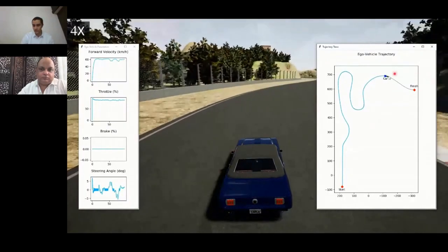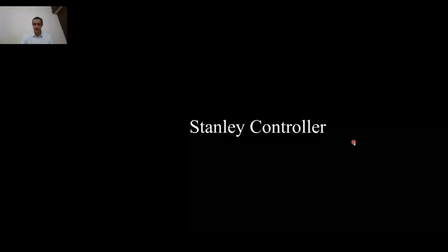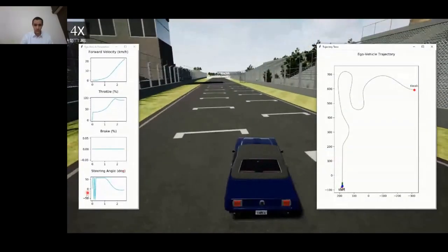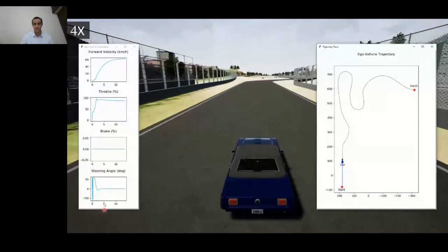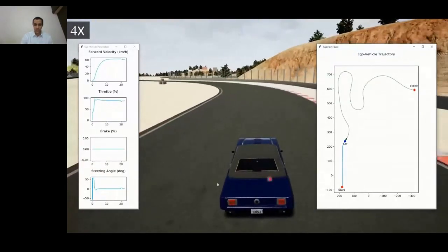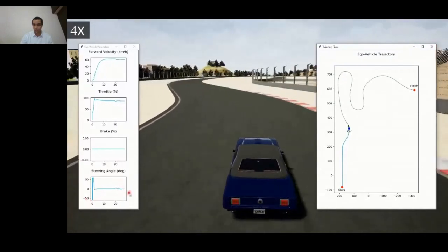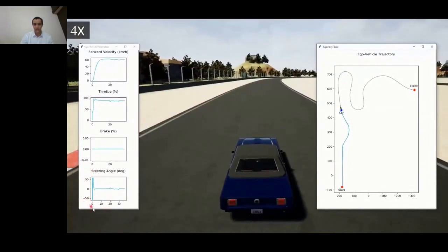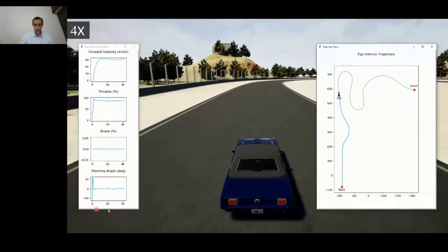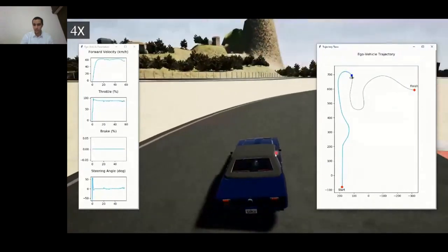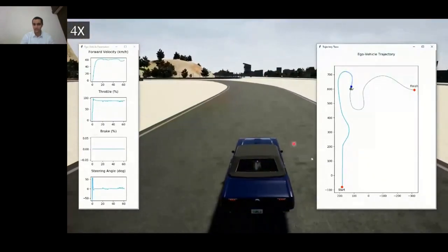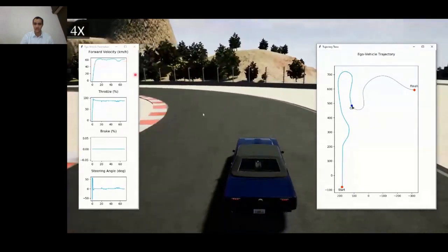Now, if you look at the Stanley control law, the initial part of the simulation itself shows that the controller has generated erratic commands due to its highly reactive nature. There is no other significant drawback of this controller. However, if we had to avoid this kind of situation, we would have to tune it for a smoother response. Then it would have underperformed in the rest of the trajectory where there are sharp turns at a higher velocity.